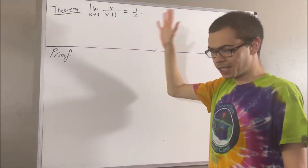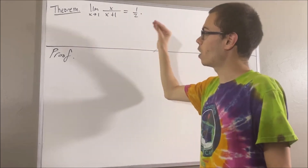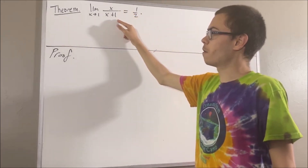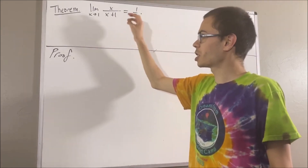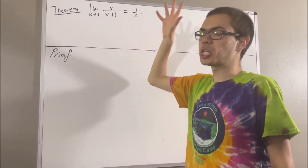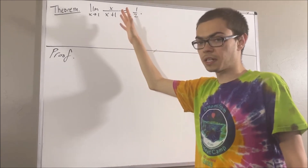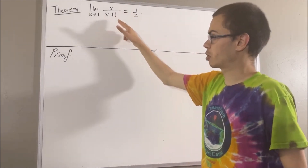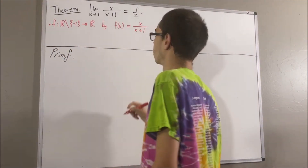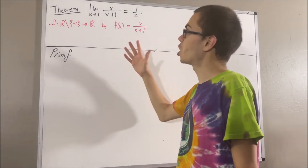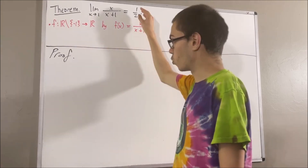Now really, we're dealing with the limit of a function. Which function exactly? Well, we can evaluate x over x plus 1 for any real number that is not equal to negative 1. So really, the function we're dealing with is f from the set of real numbers not equal to negative 1 to the set of real numbers, defined by f(x) = x over x plus 1. The whole goal is to show that the limit as x approaches 1 of our function is equal to 1 half.